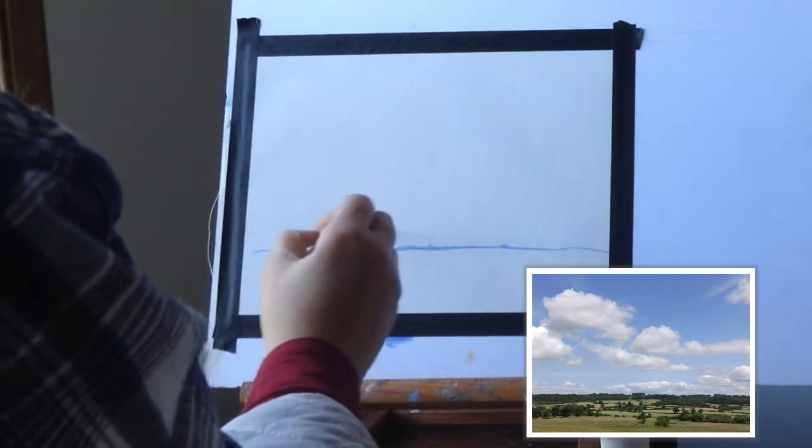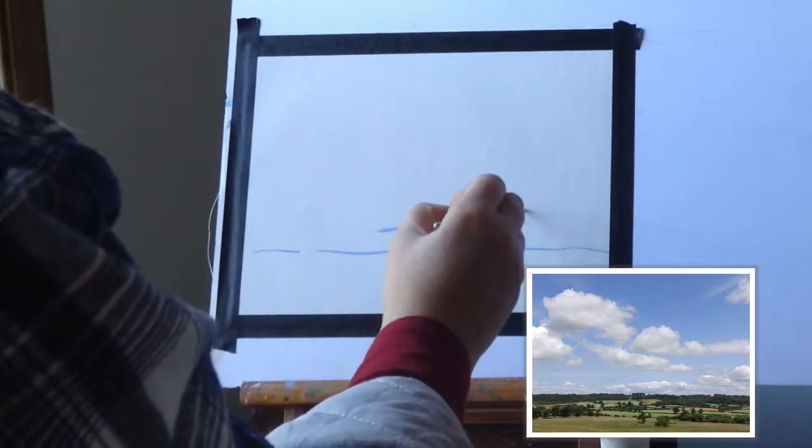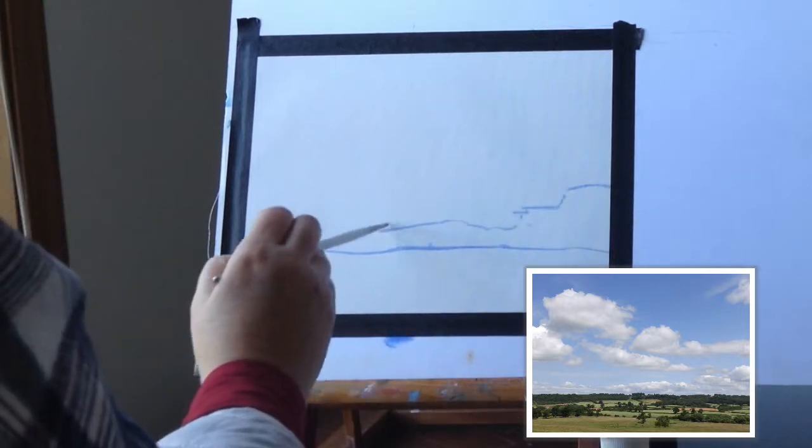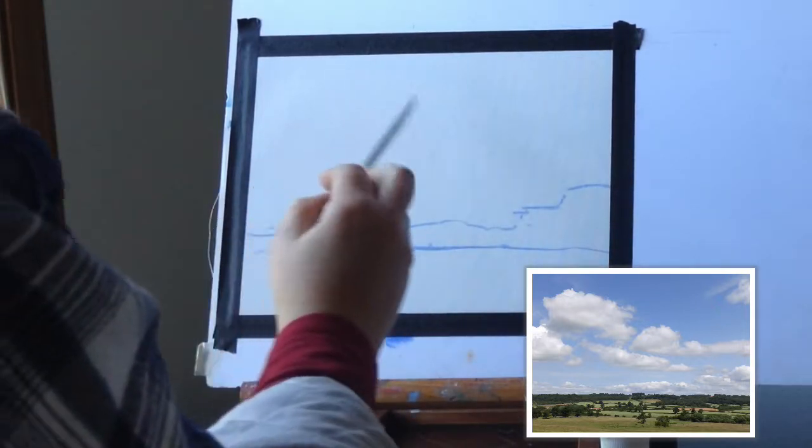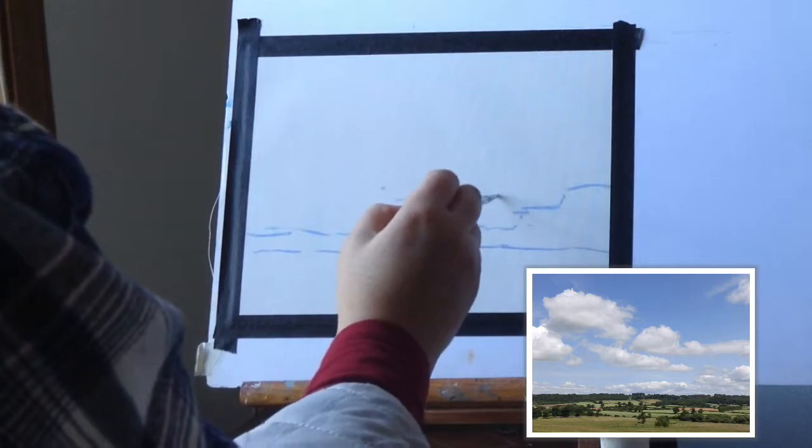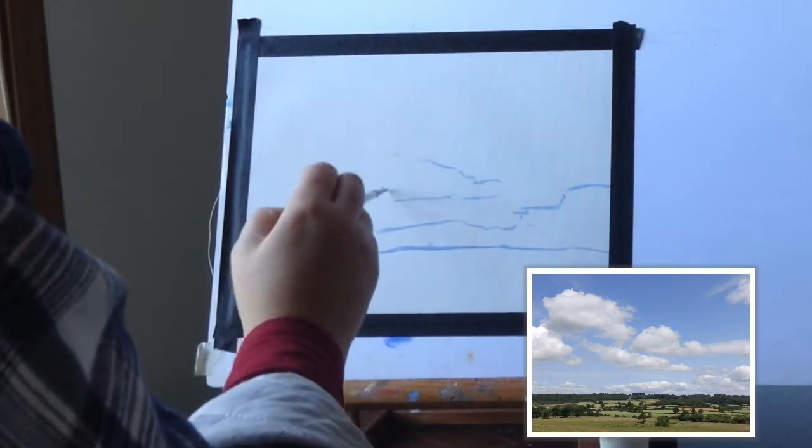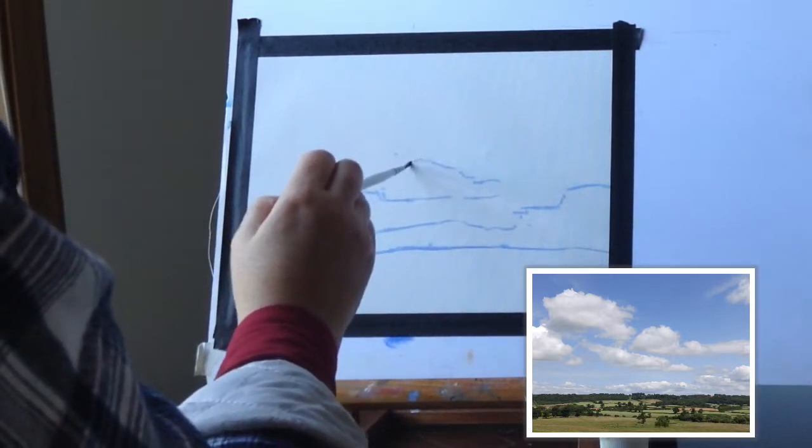So here we go. You saw me using a thinned out little puddle of paint. So it was a dab of paint and a little bit of gamsol and thinned out to almost like a watercolor consistency. And that's what I use to draw with when I do a painting.